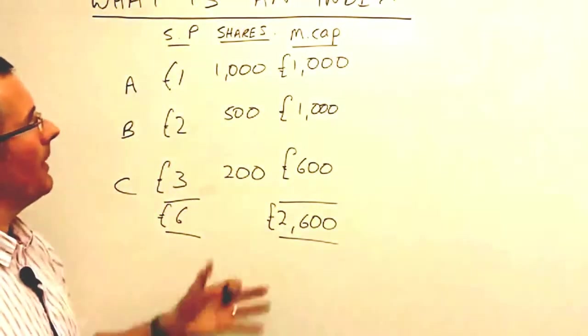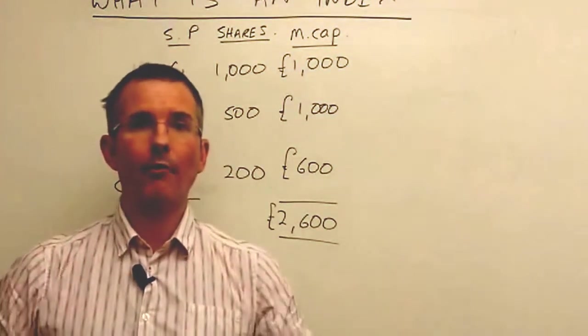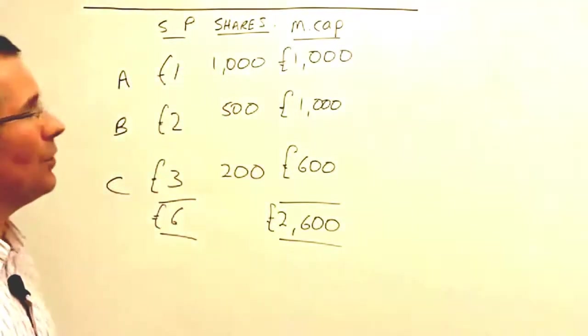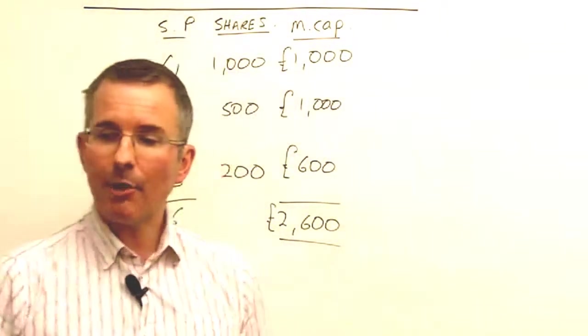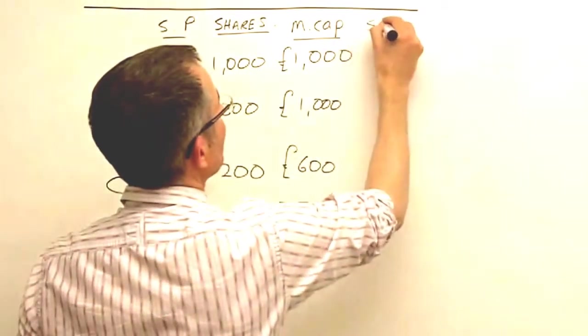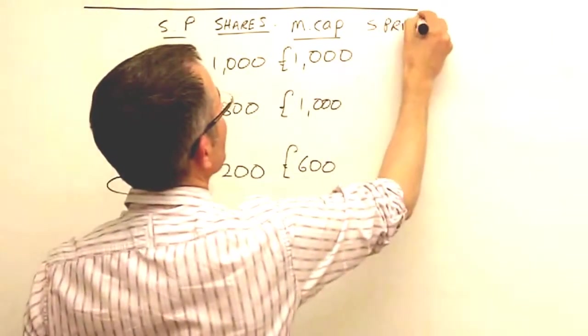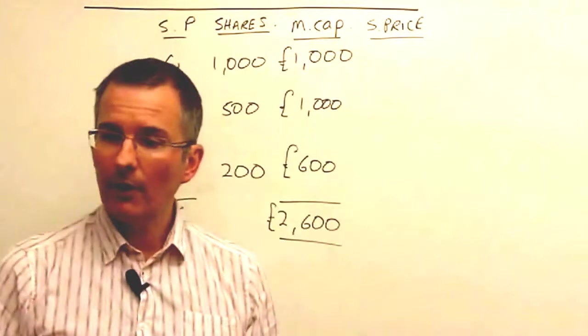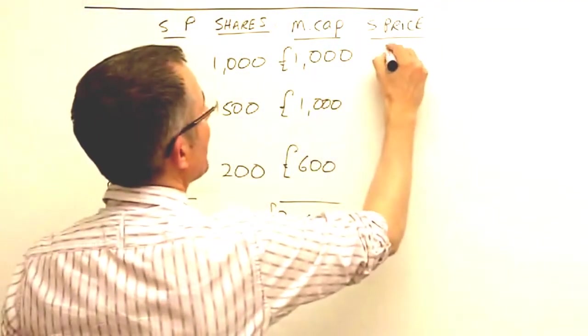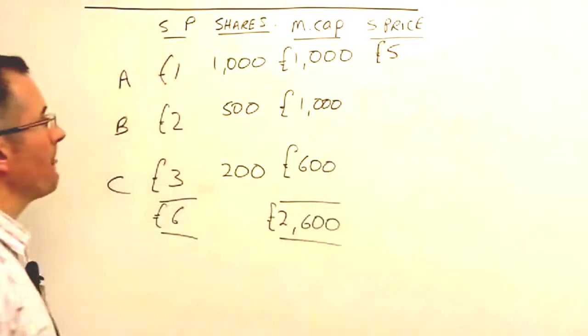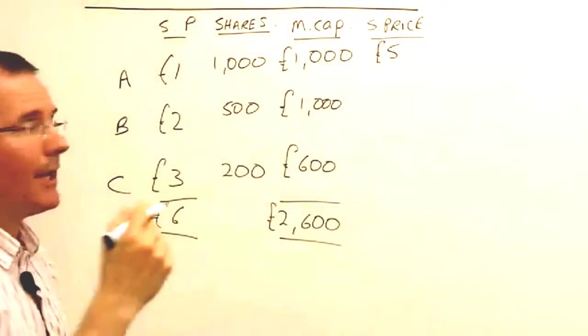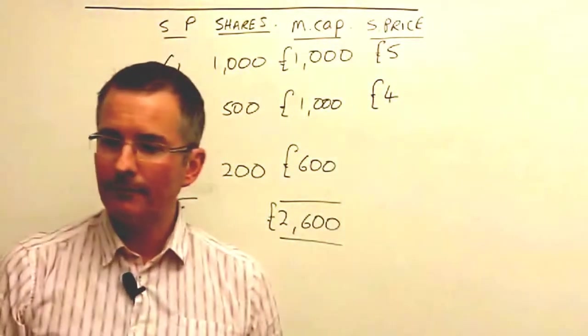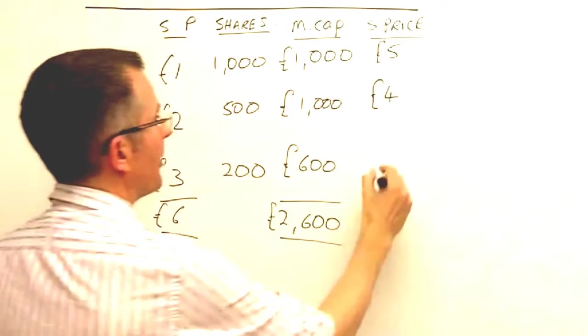Well, let's move things on, let's say, 12 months. So what's happened? Let's assume none of these companies have issued any more shares, but the share prices have changed. So a year later. Now, the share prices were £1, £2 and £3. So let's say that company A has had a tremendous year, share price is now £5. Let's say company B, not a bad year, share price has doubled to £4. And let's say company C has had a less successful year, and the share price has dropped to a pound.